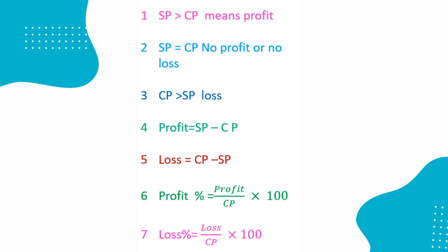Cost price is the price at which you buy some product. Selling price is the price at which you sell something.